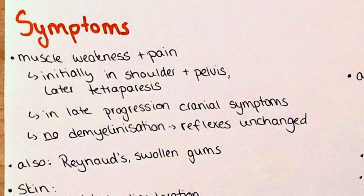The symptomatic profile is complex, but the main characteristic is muscle weakness and pain. This initially starts in the shoulder and pelvis and then progresses further proximally, and eventually patients will develop tetraparesis, meaning all four limbs will be involved. In the late stage, cranial symptoms like dysphagia — painful and difficult swallowing — can be observed. Importantly, this is not a demyelinating disease, so reflexes upon examination will be unaffected.